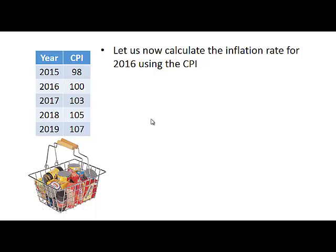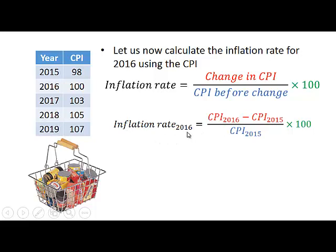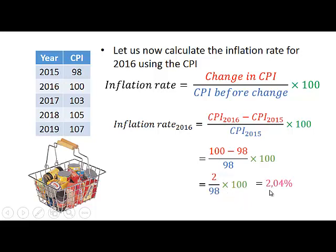We are going to calculate the inflation rate for 2016 using the CPI. The formula to calculate the inflation rate is the same way we calculate any percentage change in a variable: it is the change in CPI divided by the CPI before the change, times 100. For 2016, we compare the CPI for 2016 and 2015: (100 minus 98) divided by 98, times 100, which gives us 2.04%.